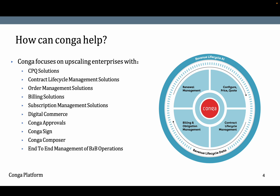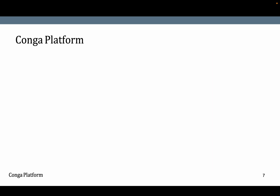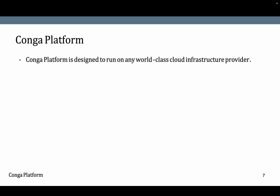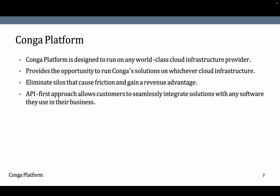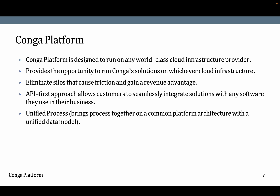Now let's learn more about the Conga Platform. The Conga Platform is designed to run on any world-class cloud infrastructure provider. It provides the opportunity to run Conga solutions on whichever cloud infrastructure the customer is using. It eliminates the silos that cause friction and gives a revenue advantage. The API-first approach allows customers to seamlessly integrate solutions with any software they use in their business — Conga has developed their own APIs which can be consumed from any platform.